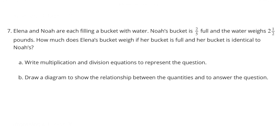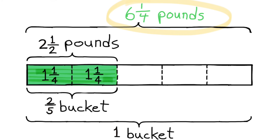Draw a diagram to show the relationship between the quantities and answer the question. Since two-fifths of a bucket weighed two and a half pounds, I divided the bucket into five sections for fifths. Each of the first two fifths contains one and one-fourth pounds. To fill the entire bucket, we'd have one and one-fourth pounds in each fifth, totaling six and one-fourth pounds.